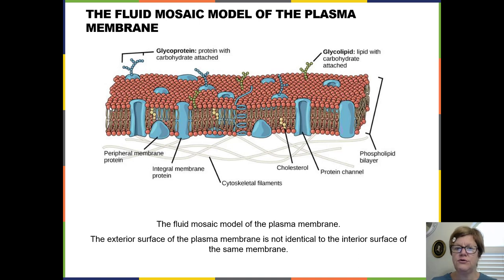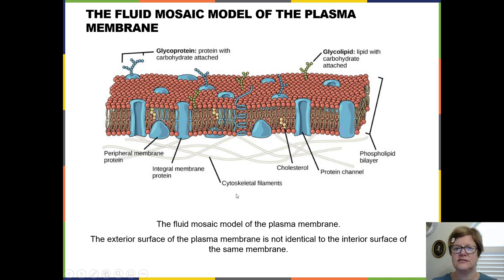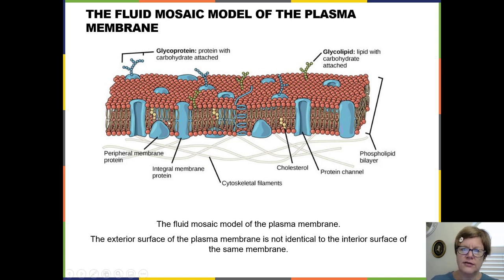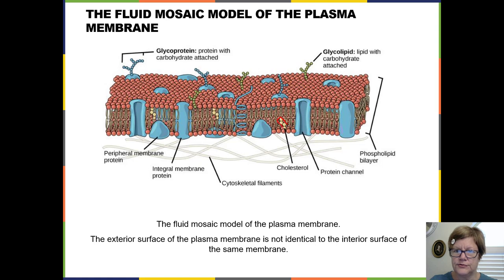Molecules can move across the membrane by different methods. One method is pore proteins — transmembrane proteins shown in blue. The cell is not a closed system; there has to be movement of energy and materials from outside into the cell and back out. Cholesterol is shown here as yellow fused rings. Integral and transmembrane proteins in blue can have pores — little channels that allow things to pass through — though not all of them do.